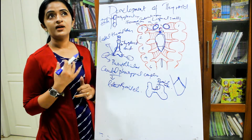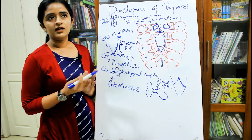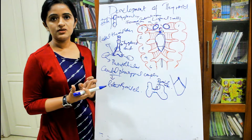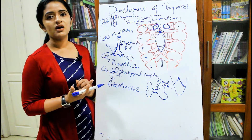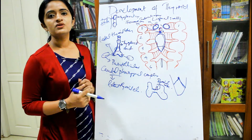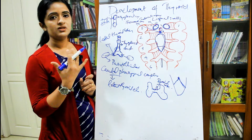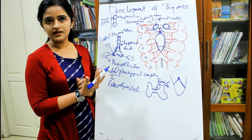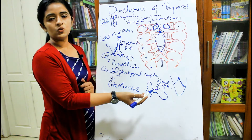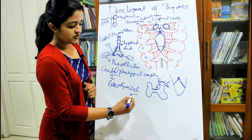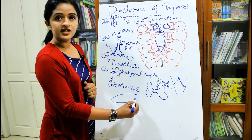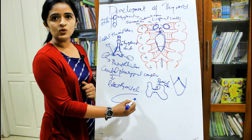The thyroid gland can also be found in abnormal positions along the course of the thyroglossal duct — in the tongue, above the hyoid bone, below the hyoid bone, or even reaching into the thoracic cavity behind the sternum. If the downgrowth starts from the foramen cecum but does not grow down at all, the thyroid gland develops in the tongue on its dorsum — this is known as lingual thyroid.